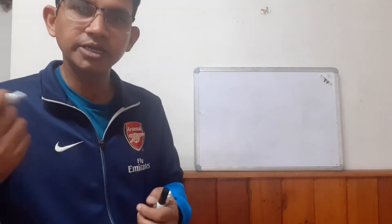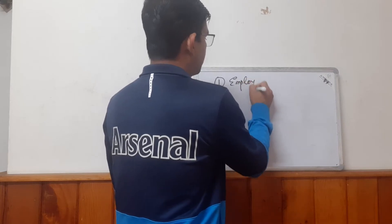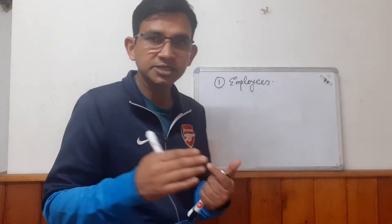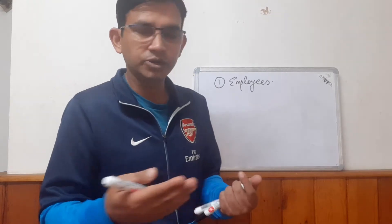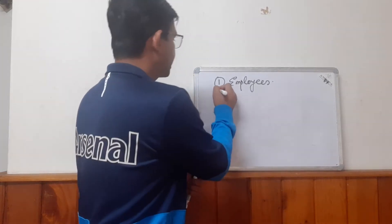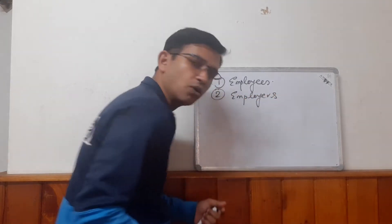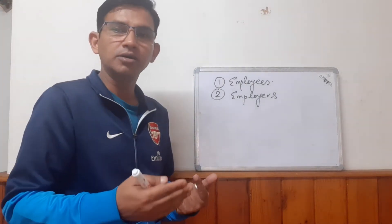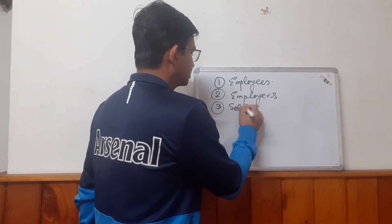There are normally three types of units — a broad classification. Number one is employees. Number two, employees means they only have their labor, physical or mental effort — they don't have other factors of production. Number three, employers own the other factors of production but only hire labor or workers. And the third type is the self-employed.